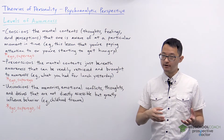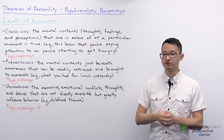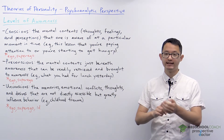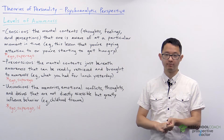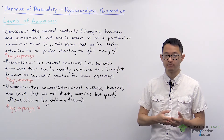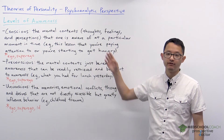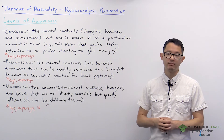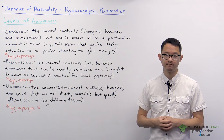He also believed that the structure of our personality has three components: the id, the ego, and the superego. The way that the structure of our personality relates to the levels of awareness is often represented using this iceberg diagram.